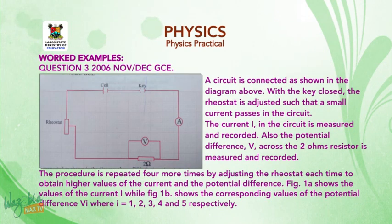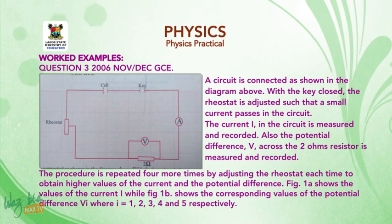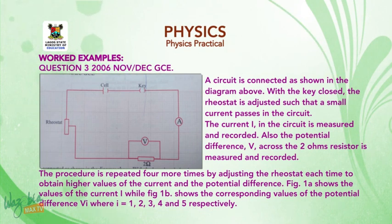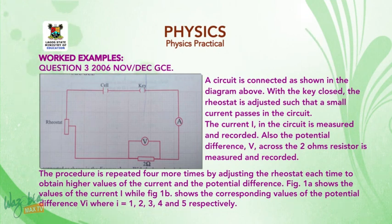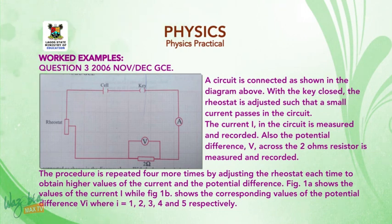Worked sample: I will use a past question — Question 3, November/December 2006. A circuit is connected as shown in the diagram. With the key closed, the rheostat is adjusted such that a small current passes in the circuit. The current I is measured and recorded. Also, the potential difference V across the 2-ohm resistor is measured and recorded. The procedure is repeated four more times by adjusting the rheostat to obtain higher values of current and potential difference. Figure 1a shows the values of current I, while figure 1b shows the corresponding values of potential difference Vᵢ, where i represents 1, 2, 3, 4, and 5 respectively. We will go on break and continue after.